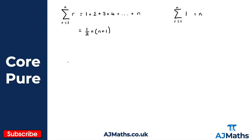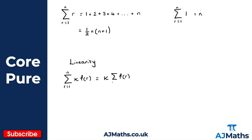Now let's look at what we call linearity. Linearity is a property that allows us to simplify expressions involving summations. If I have the summation from r equals 1 to n of k times f of r, where k is a constant, linearity allows me to factor that k out in front. So I write this as k lots of the summation of f of r from r equals 1 to n. This is a really important property for simplifying summation expressions that have a constant factor.